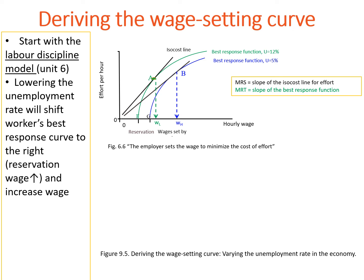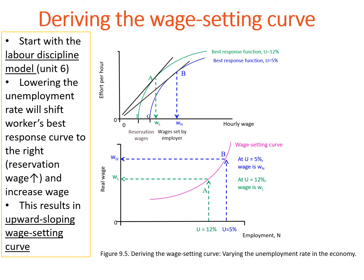Now let's use this information to derive the wage-setting curve. We can bring together Figure 9.4 — the economy-wide wage-setting curve depicted on the bottom — and Figure 6.6. The wage-setting curve depicts two points: point A associated with the unemployment rate of 12%, and point B associated with the unemployment rate of 5%. We concluded that, everything else constant, wages will be higher when the unemployment rate is lower. This is exactly what the wage-setting curve reflects. Figure 9.5 shows that the wage-setting curve is derived as part of the labor discipline model, which illustrates how employees and employers interact when setting wages.